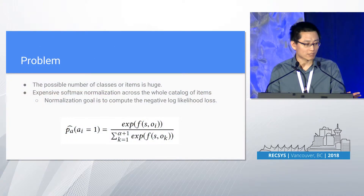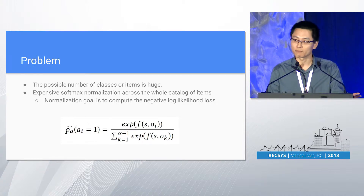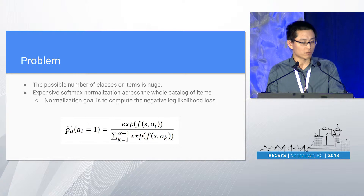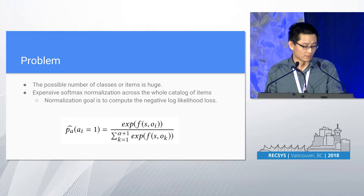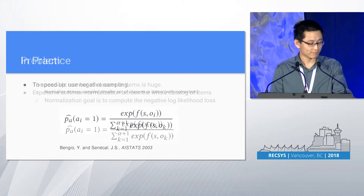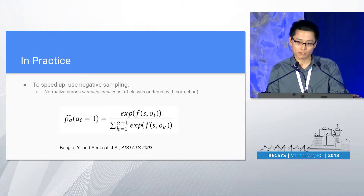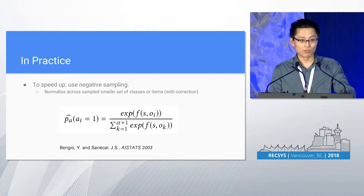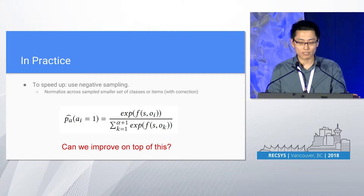As you can imagine, the problem here is that the possible number of classes or items can be huge. When we want to train this model, we need to compute the loss, which involves expensive softmax normalization across the whole catalog of items. In practice, we do negative sampling — instead of normalizing across the whole catalog, we sample a smaller set of items, then do the normalization with some correction to speed up.